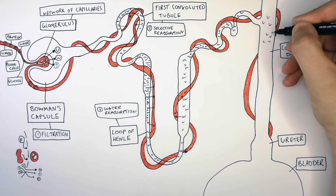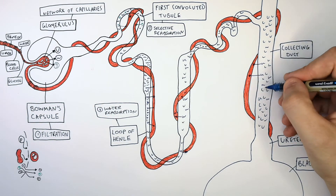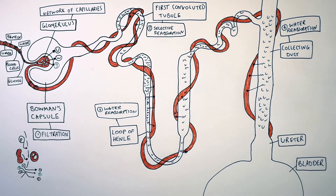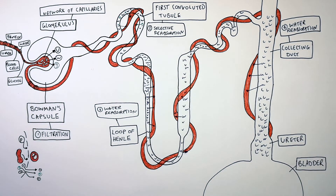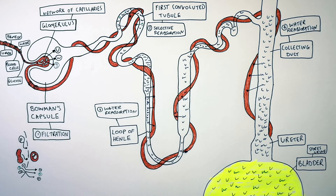The remaining urea and water enter the collecting duct via the second convoluted tubule. In the collecting duct, water is reabsorbed back into the blood. If there is a high concentration of water in your blood and you're well hydrated, much of that water in the collecting duct will pass through the ureter to the bladder and out of your body. Any remaining urea and water that needs to be excreted is excreted as urine — this mixture passes through the ureter into the bladder where it is stored. The function of the bladder is to store urine, which is then passed out of the body via the urethra.